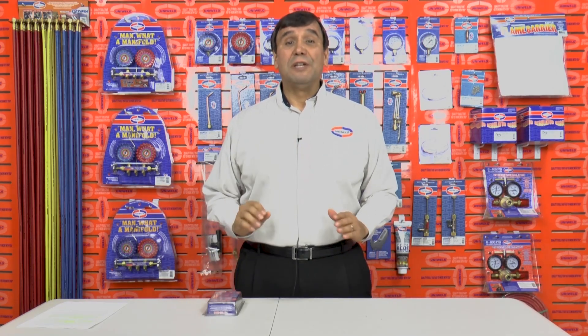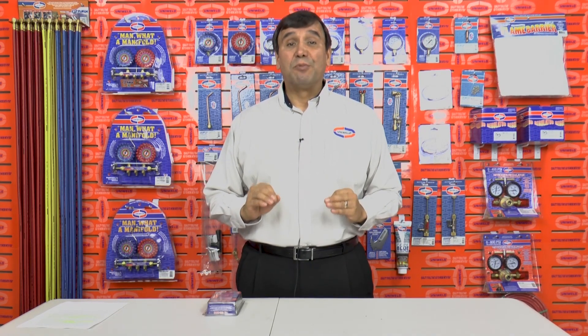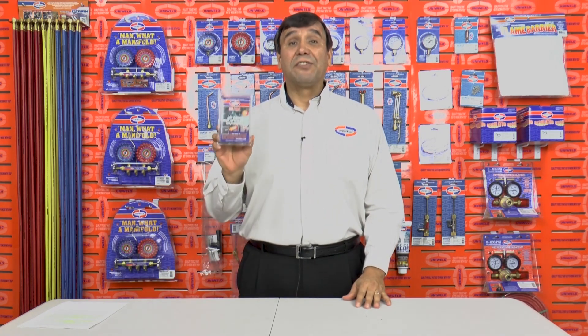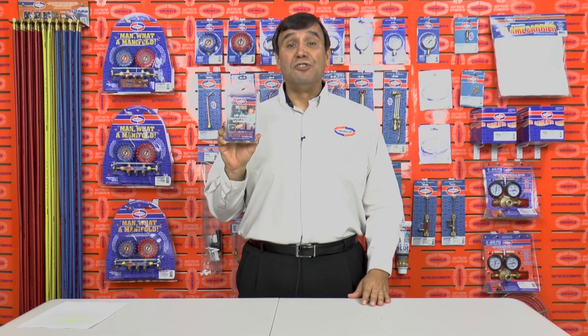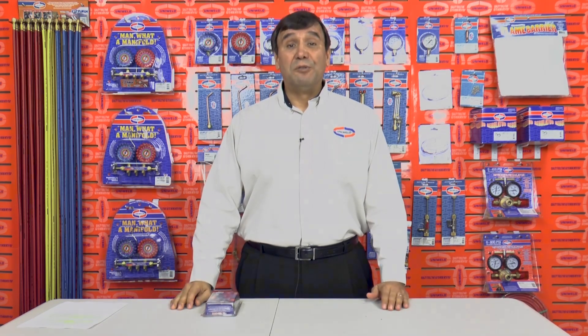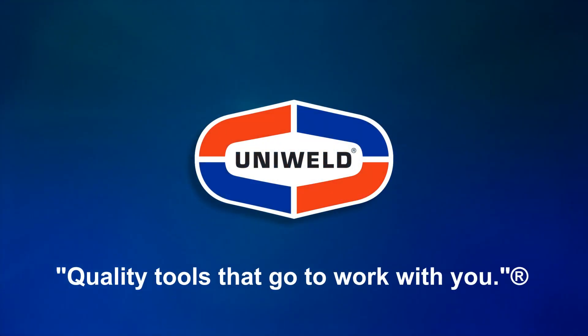Using UniWeld's Uni4300, we were able to soft solder an aluminum tube to a copper tube and subject it to a pressure of 800 psi without any leaks. Be sure to ask for Uni4300 at your UniWeld authorized distributor. Thank you for watching. I'm Richard with UniWeld. Quality tools that go to work with you.